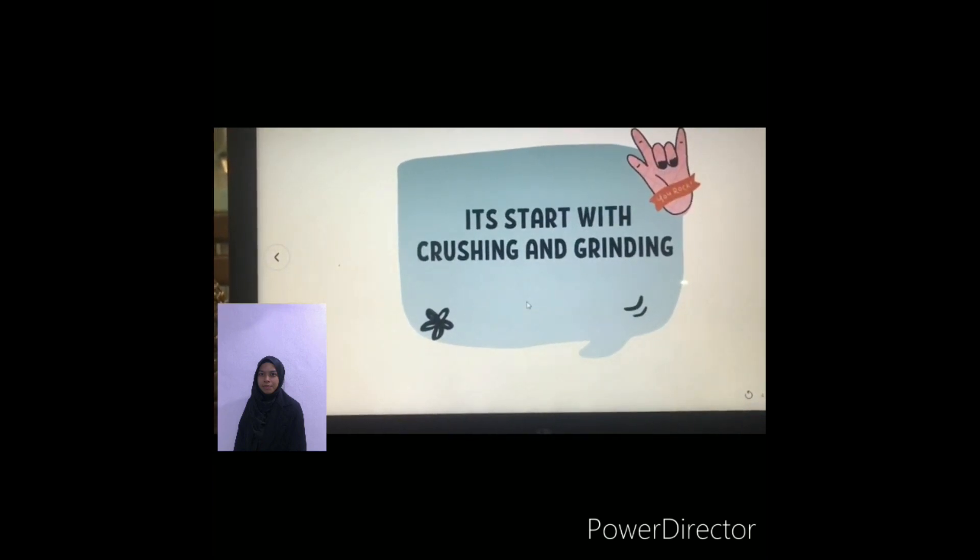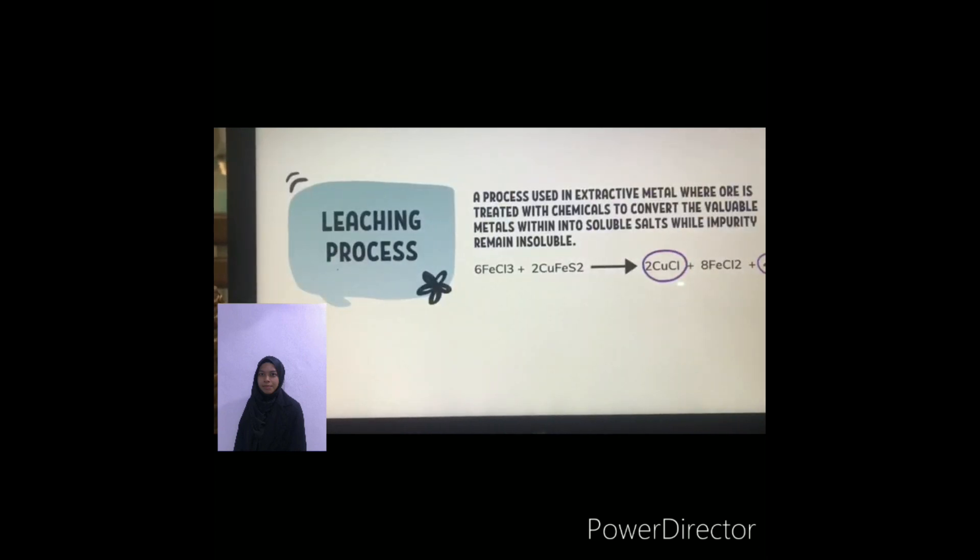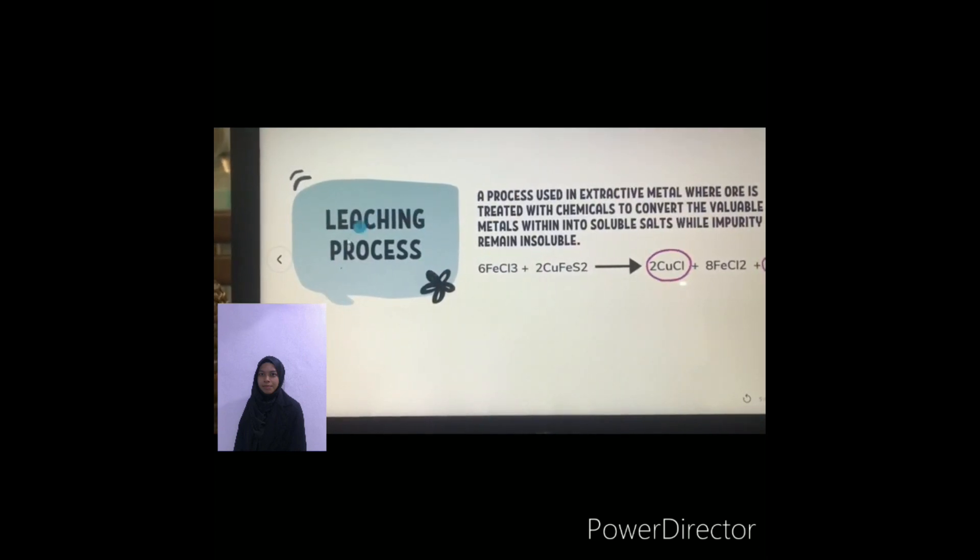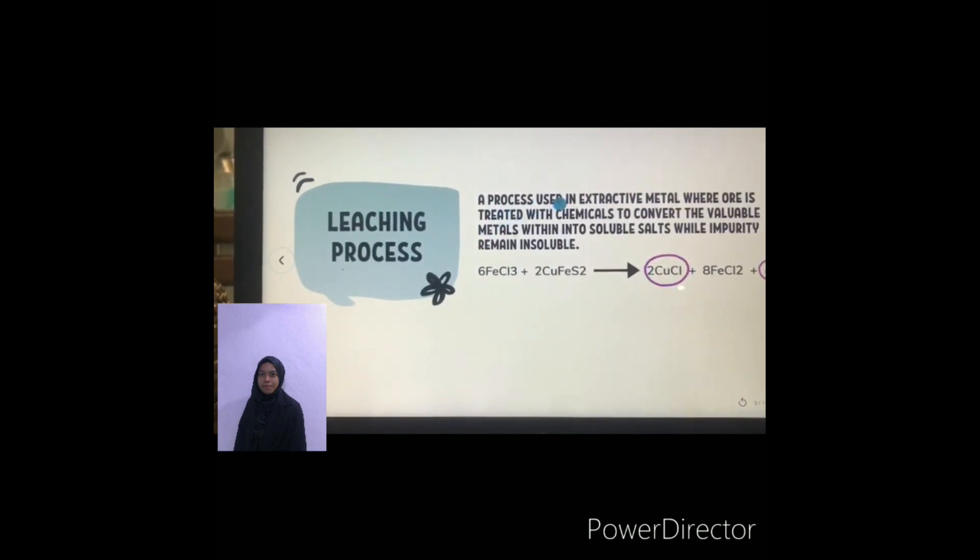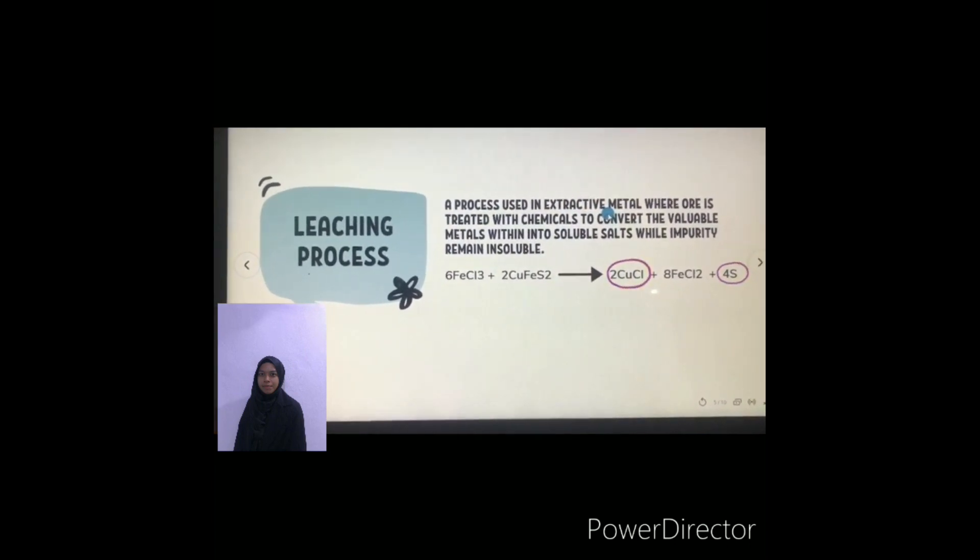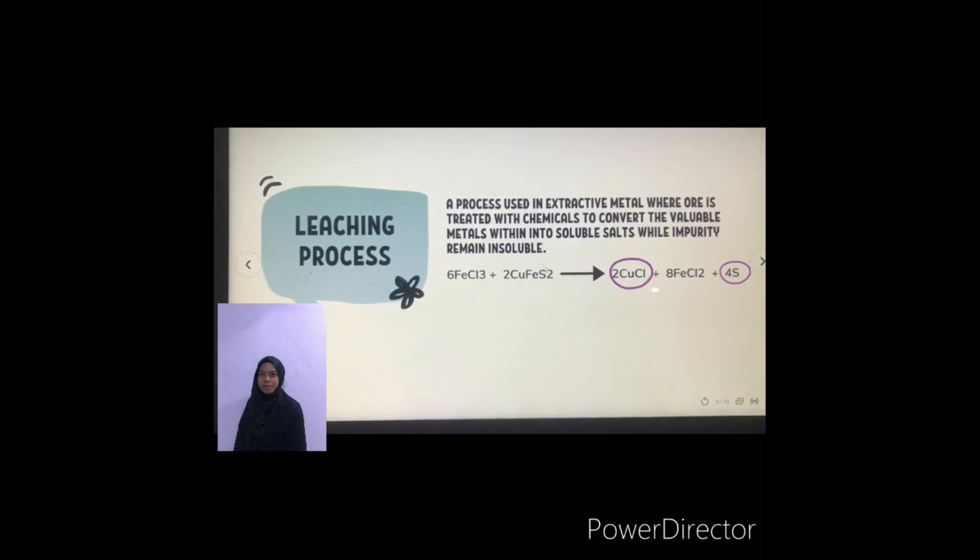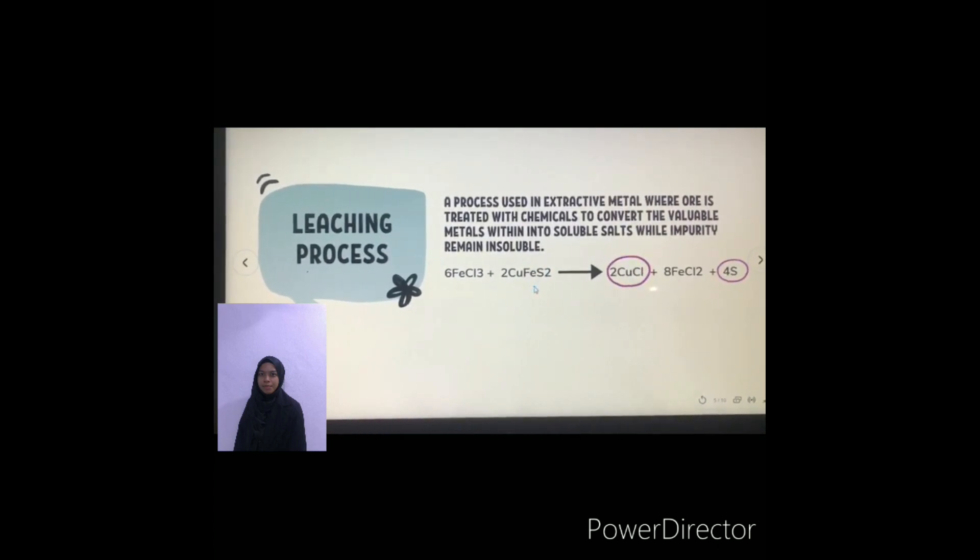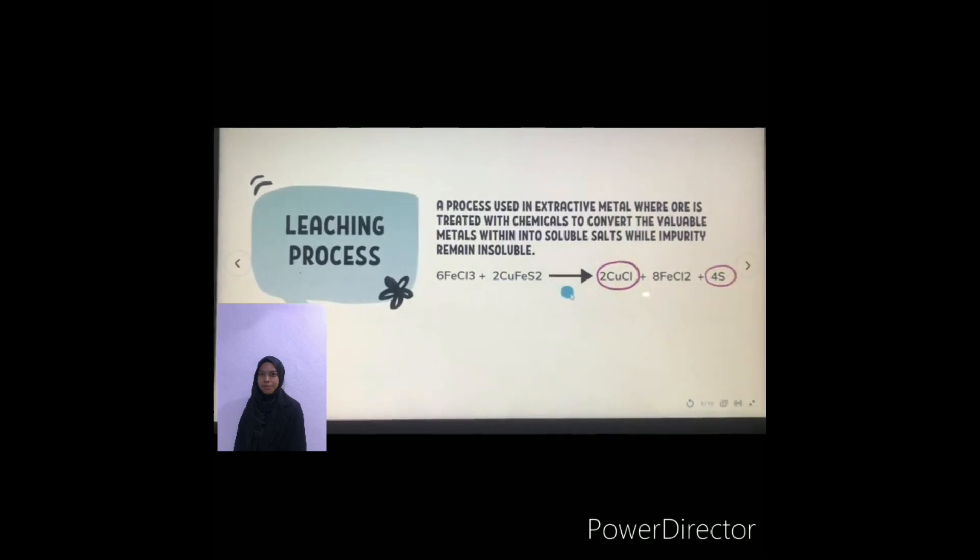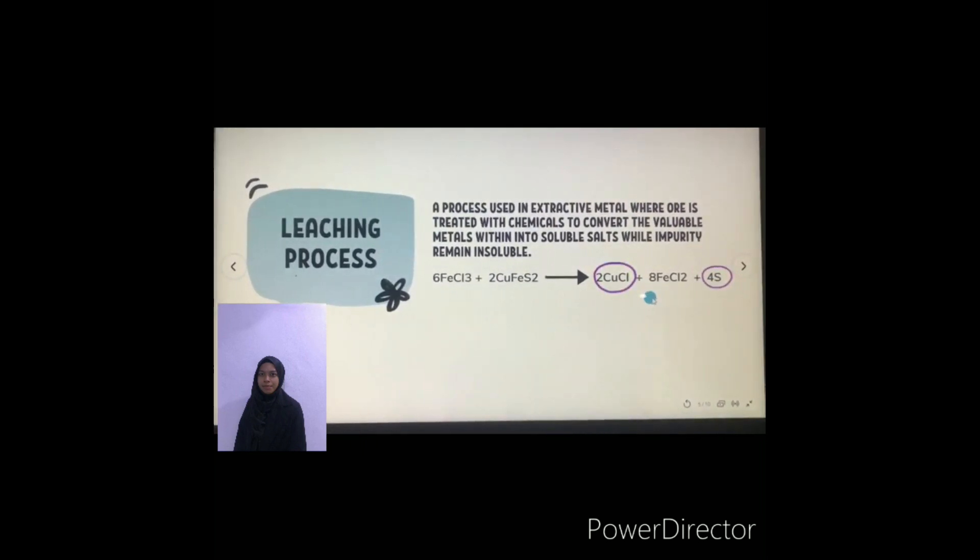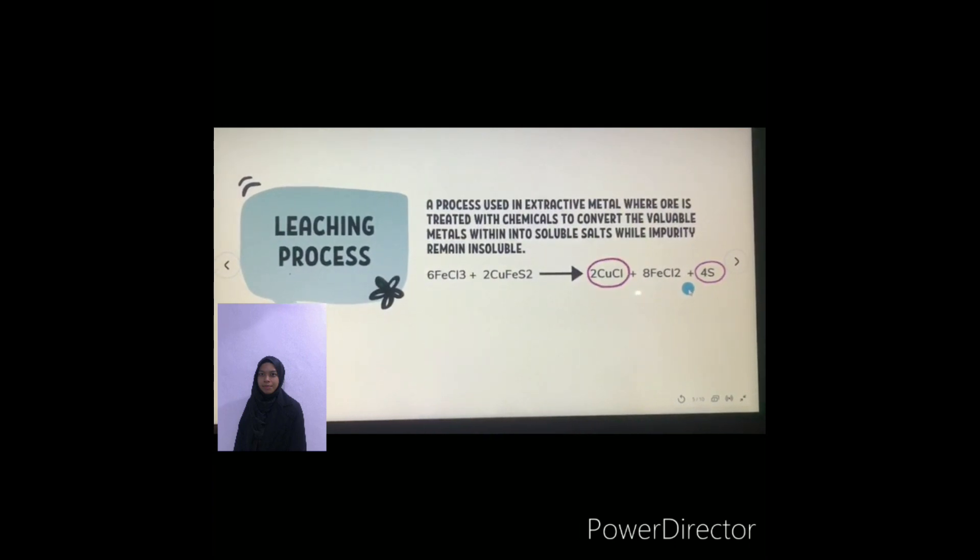As we know, the chalcopyrite is done with crushing and grinding process. After that, chalcopyrite will undergo the leaching process. The leaching process is a process used in extractive metallurgy where ore is treated with chemicals to convert the metal into solution. The ferric chloride will be mixed to the sulfur mineral and produce copper chloride, ferrous chloride, and also sulfur.